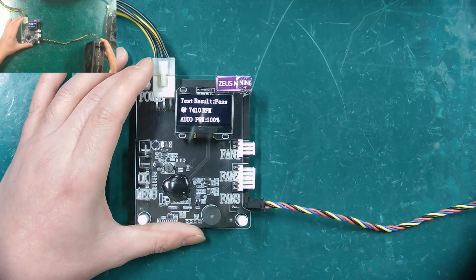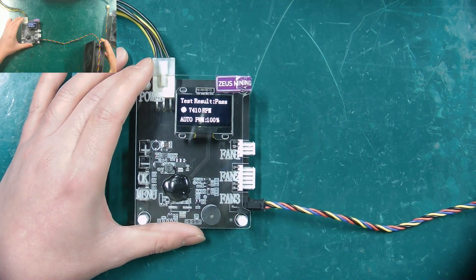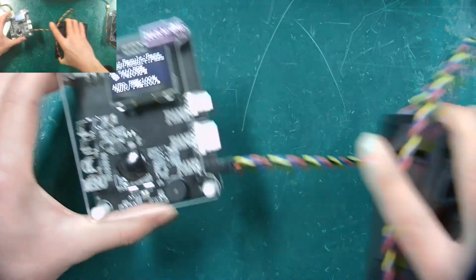If the fan is damaged, it will show fail, and it cannot pass the test. Alright, that's the functions and how to use the F1 miner fan tester. Thank you all.